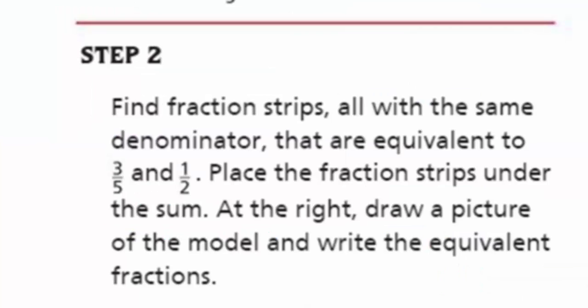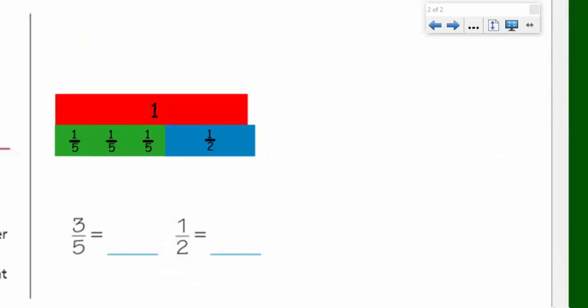Now, step two says, find fraction strips all with the same denominator that are equivalent to three-fifths and one-half. Place the fraction strips under the sum. At the right, draw a picture of the model and write the equivalent fractions. I think what I will do is I will just put my fraction strips underneath the actual model that we're using right now.